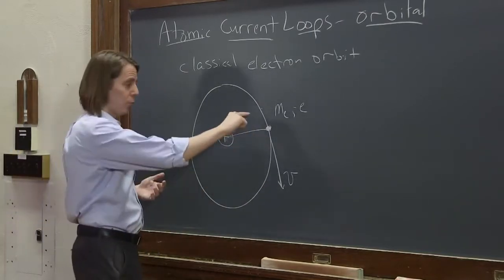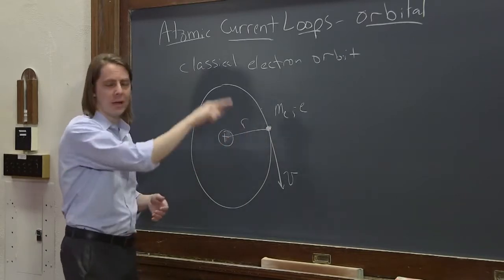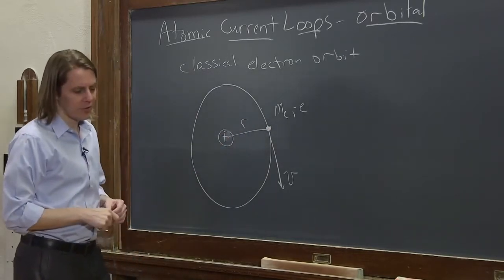And if I wanted to draw the force, it's orbiting because there's an electrostatic force pulling it in. It's moving at right angles to the force. That's why it's in circular motion.